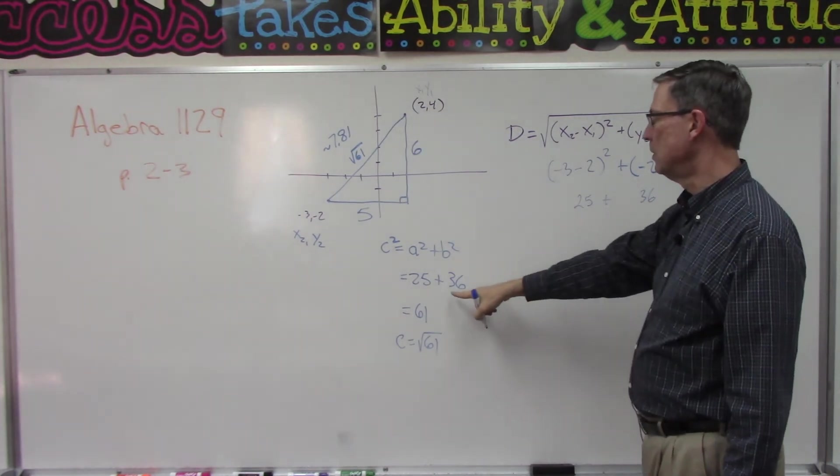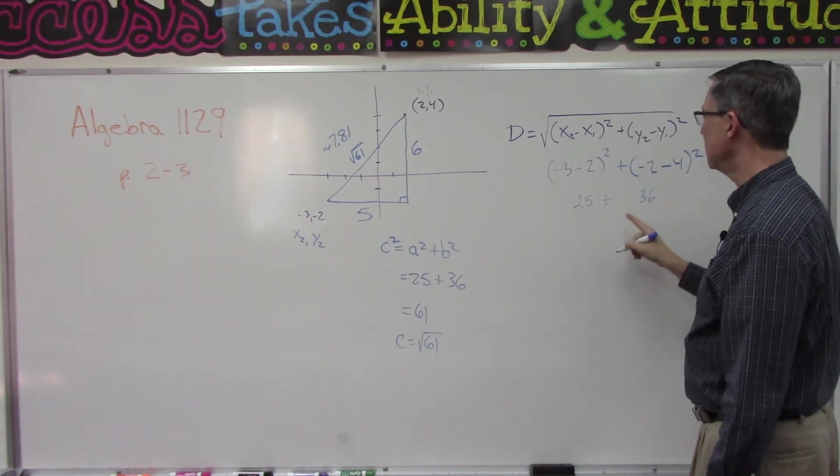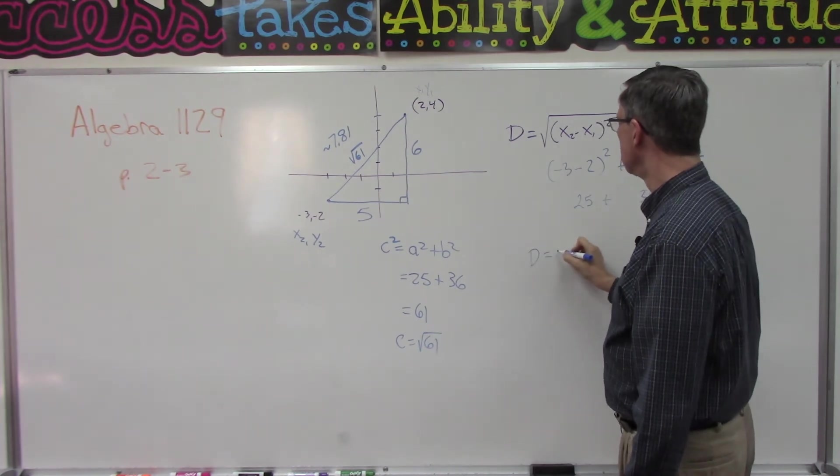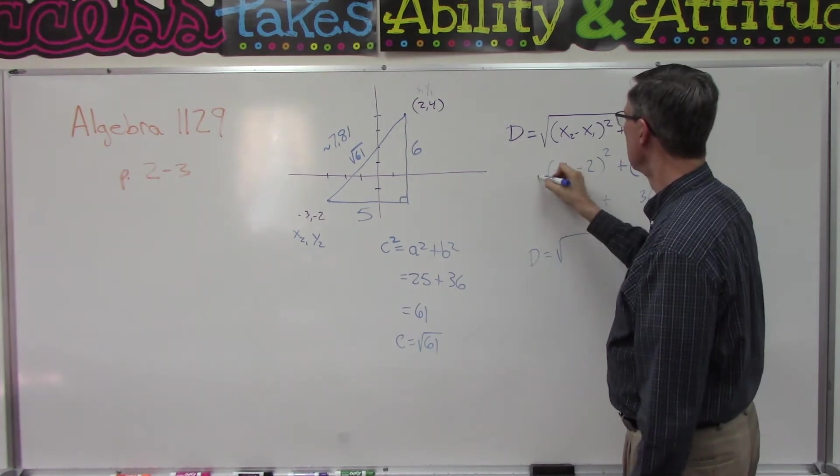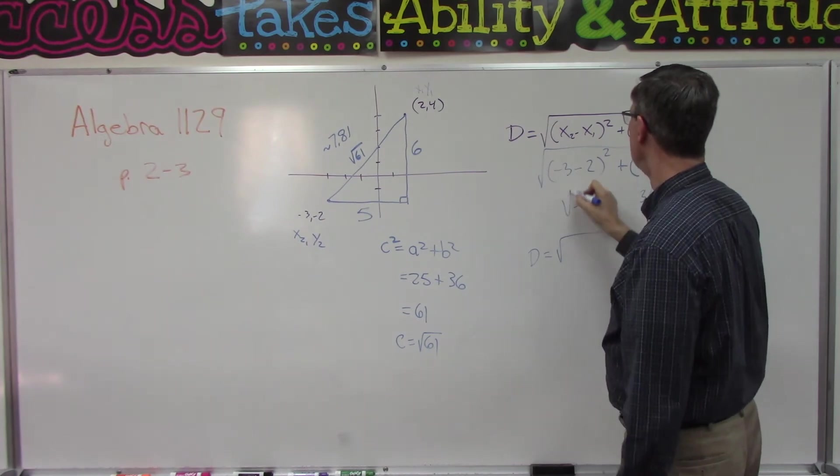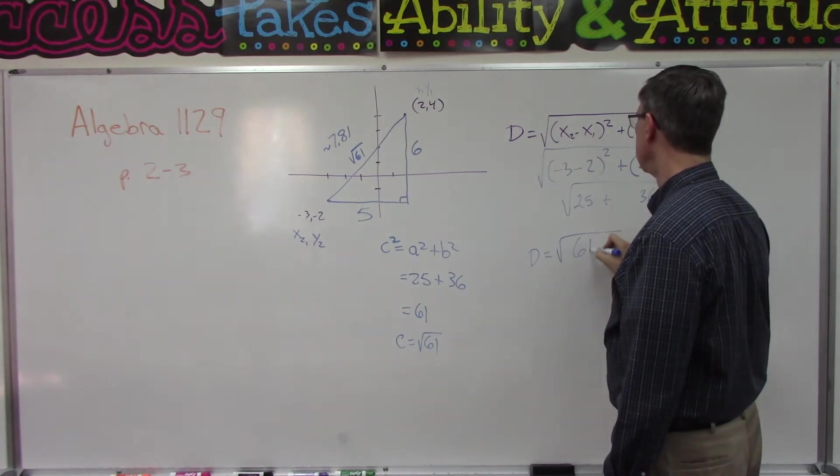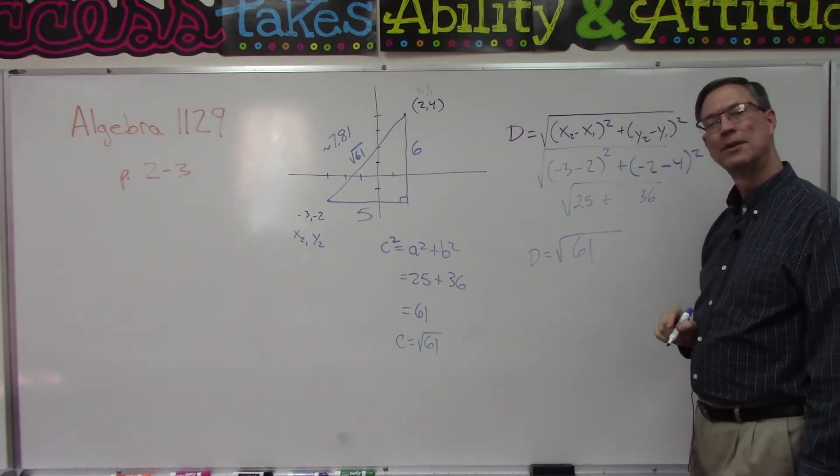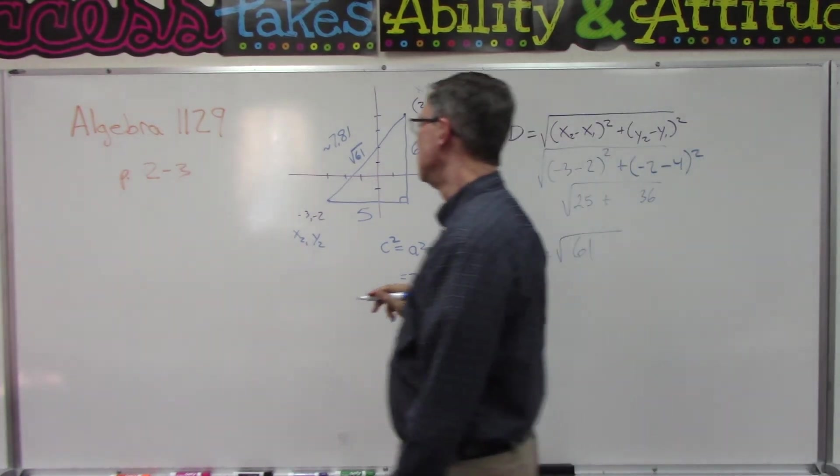Does that look similar? Look at that - 25 plus 36. And so the distance equals the square root of... See all of this, it's the square root of the square root of 61.